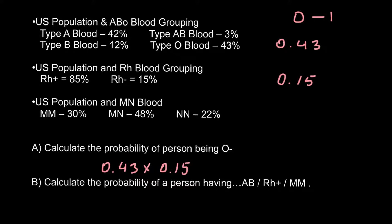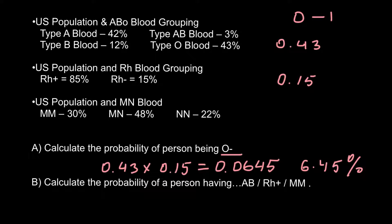We multiply 0.43 by 0.15 and the answer is 0.0645. If we need the answer in percentage form, we move the decimal point two places to the right — in other words multiply by 100 — giving us 6.45%. That is the probability of being RH negative and having blood group O, and that is our answer for the first question.